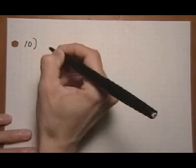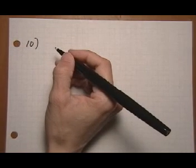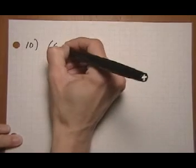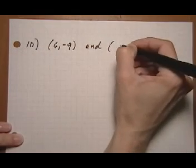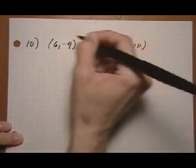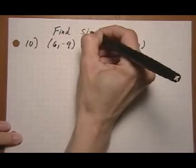And let's do number 10 now. Same idea, we want to find the slope going through 2 points, and we are given (6, -9) and (6, -10). And we want to find the slope.